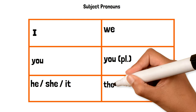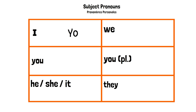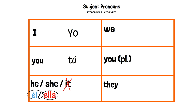Now let's talk about los pronombres personales en español. To say I, you would say yo. You is tú. He is él. She is ella. Now in Spanish, we do not have an it. In Spanish, things are either a he or a she, and we will discuss this more later.